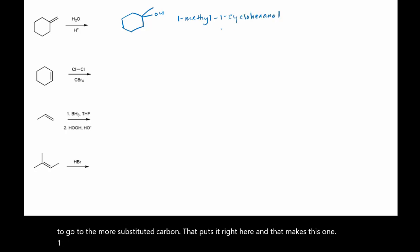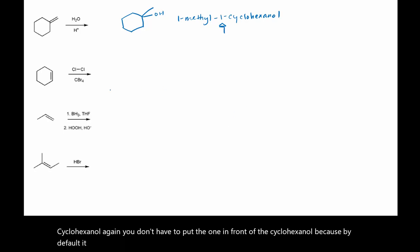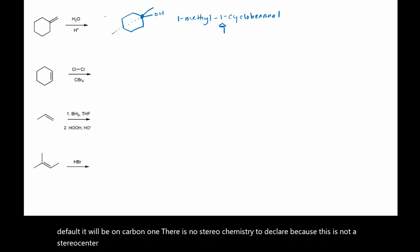That puts it right here, and that makes this 1-methyl-1-cyclohexanol. You don't have to put the one in front of the cyclohexanol because by default it will be on carbon one. There is no stereochemistry to declare because this is not a stereocenter — both sides are the same.